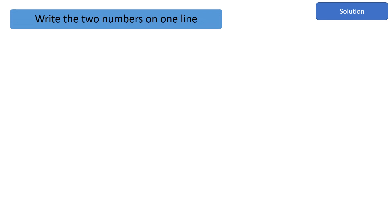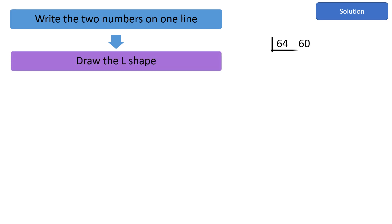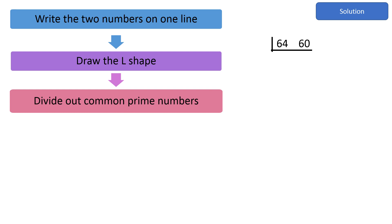To efficiently solve this problem, let us use the continuous division method. Write the two numbers on one line and draw the L shape. Divide out common prime numbers. Since both 64 and 60 are even numbers, use 2 as their common prime divisor.